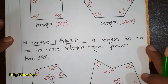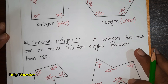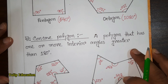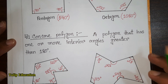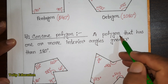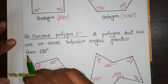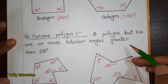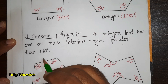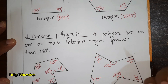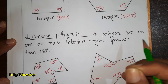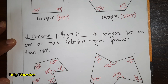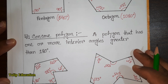Next we will discuss about concave polygons. What is the definition of a concave polygon? A polygon that has one or more interior angles greater than 180 degrees — that means at least one or more interior angles will be greater than 180 degrees.